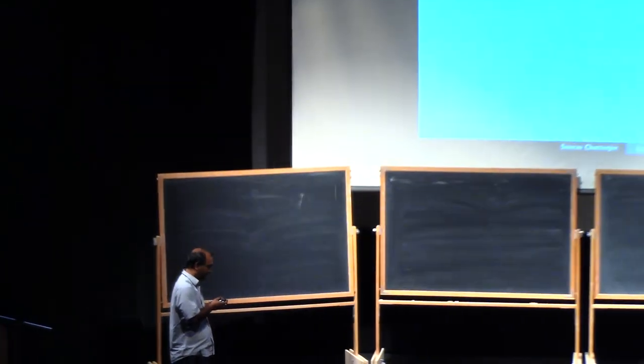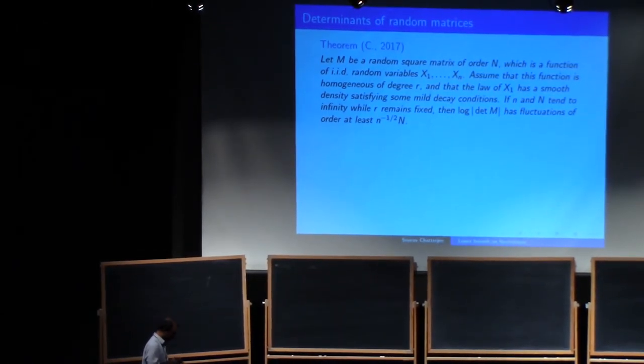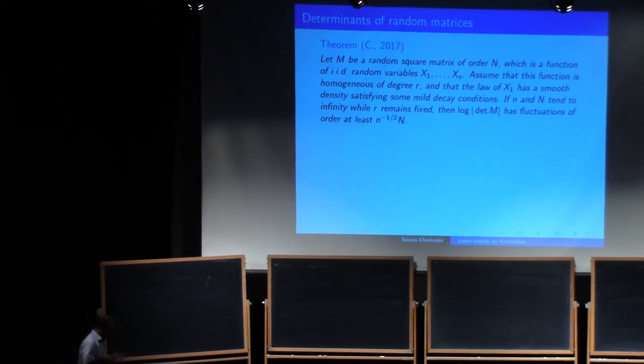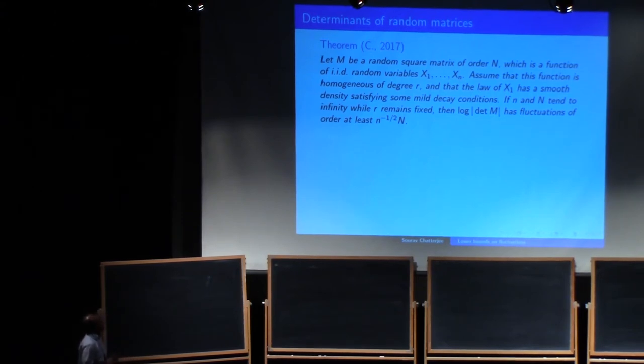Finally, here is a little result about random matrices. So suppose M is a random square matrix of order capital N, which is a function of i.i.d. random variables, x1 to xn. So each entry is a function of x1 to xn. And assume that this function is homogeneous of degree r. So you take lambda x1 to lambda xn, and you apply this, and you get lambda to the r times the original matrix. And assume that the law of x1 has some smooth density, et cetera. Then as if little n and capital N tend to infinity, where this r remains fixed, where r is the degree of homogeneity, then the log of the determinant has fluctuations of order 1 over root n times capital N. 1 over root little n times capital N.